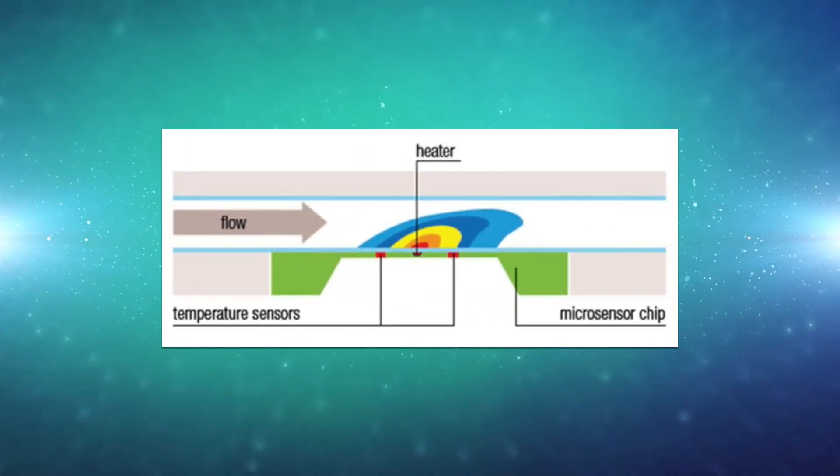A micro heater provides a minimal amount of heat to the media monitored. Two temperature sensors located on both sides of the heat source detect temperature variation. The flow rate is then calculated based on the thermal dispersion, which is directly related to the flow rate.